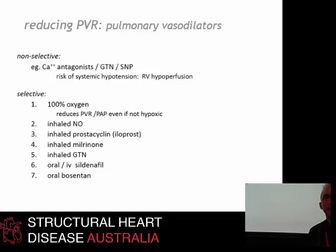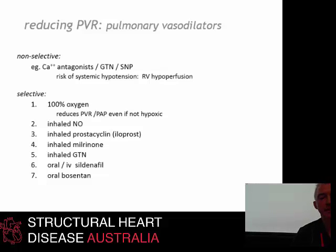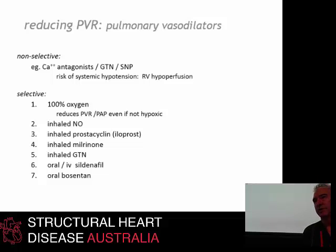What can we do to reduce pulmonary vascular resistance perioperatively? There are non-selective agents such as calcium channel blockers, GTN, and nitroprusside, but we don't use these for this indication because they will also decrease right-to-left coronary perfusion while producing systemic hypotension. Instead, we should use selective agents in patients with significant RV dysfunction. Things you can do include giving a high FiO2 — which has been shown to reduce PVR even if the patient is not already hypoxic — and giving inhaled vasodilators such as inhaled nitric oxide and iloprost.